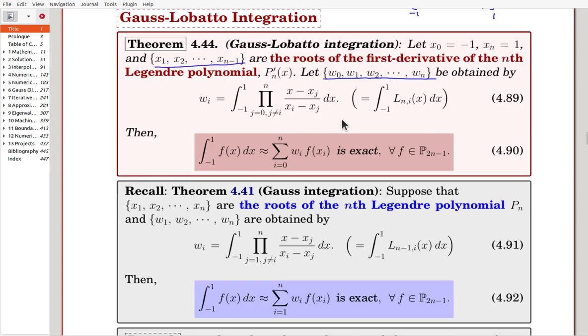This integration can be compared with the Gauss integration. Here we recall the Gauss integration. And x1 to xn are roots of the nth Legendre polynomial. And W1 to Wn are obtained from here the Lagrange-Cardinal functions of the degree n minus one. Over there there's degree n. And also for this one there are two n parameters. And we decide that then by using this technique. Then here the Gauss integration quadrature must be exact for the functions from p_{2n-1}.